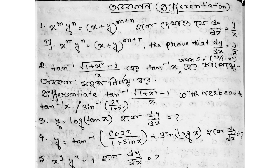The second question is: find the derivative of tan inverse of (root over (1 plus x squared) minus 1) divided by x. The third question is: find the derivative of sin inverse (2x divided by 1 plus x squared).